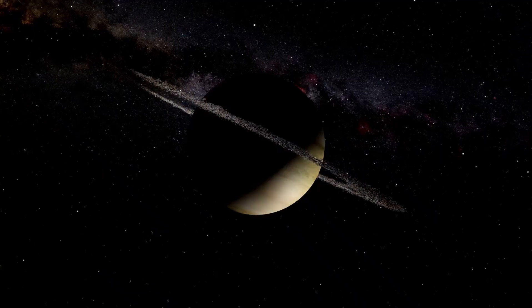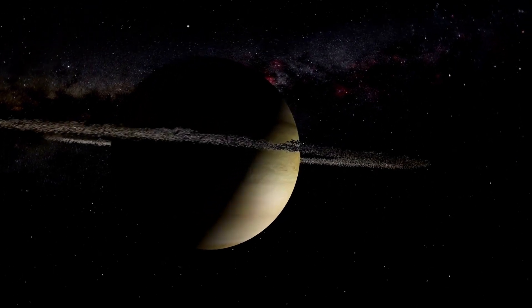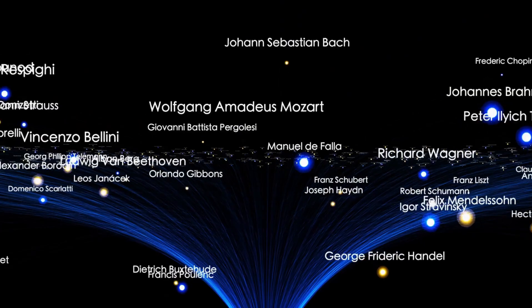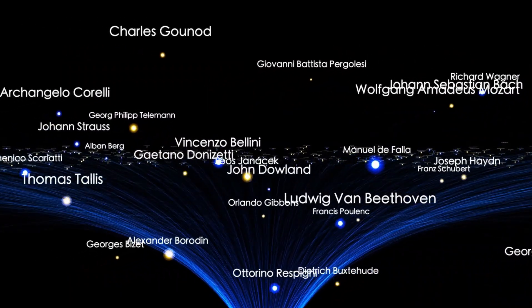Voyager 1 launched second, but traveling faster, reached Jupiter and Saturn first, while Voyager 2 went on to explore Uranus and Neptune, becoming the only spacecraft to visit these planets.